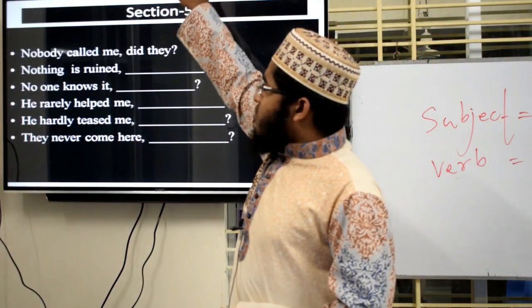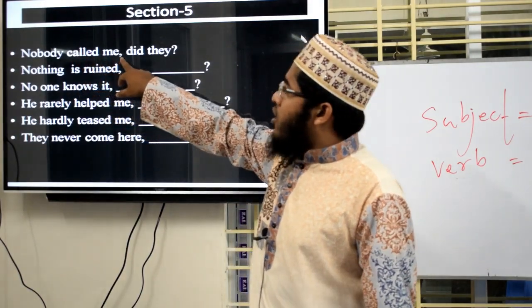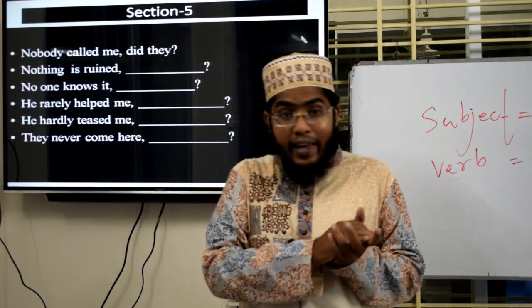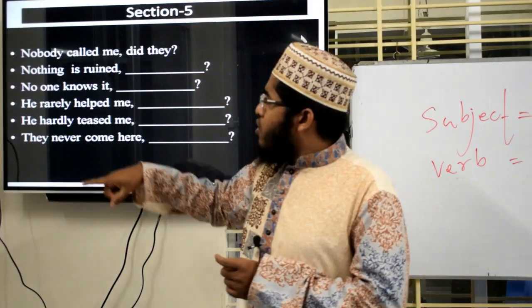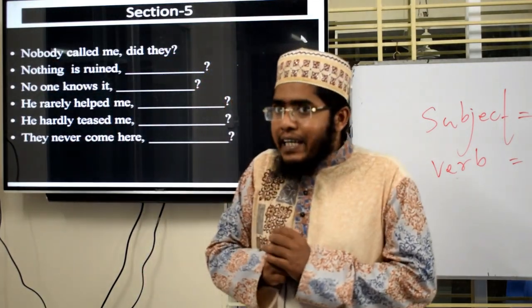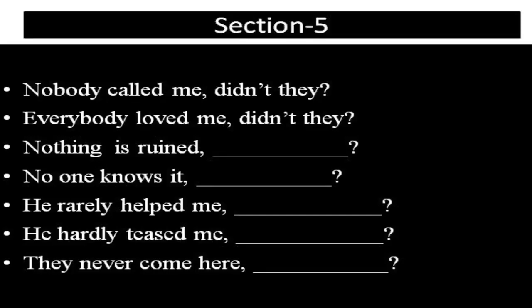Now let's apply rule 5. 'Nobody called me' — 'nobody' gives negative meaning, so use positive tag. Subject is 'they' (rule 4 applies), so tag is 'did they?' Now solve: 'Nothing is ruined'; 'No one knows it'; 'He rarely helped me'; 'He hardly teased me' — both 'rarely' and 'hardly' give negative meaning; and 'The neighbor come here' — 'neighbor' here gives negative meaning. Please solve all. I'm waiting for your response.